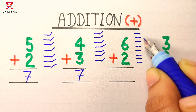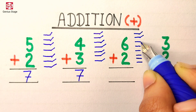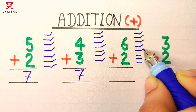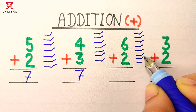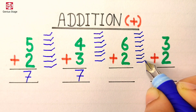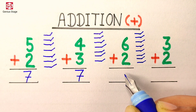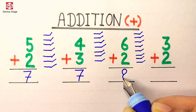Now we will count them all: 1, 2, 3, 4, 5, 6, 7, 8. So the answer to this question is 8.